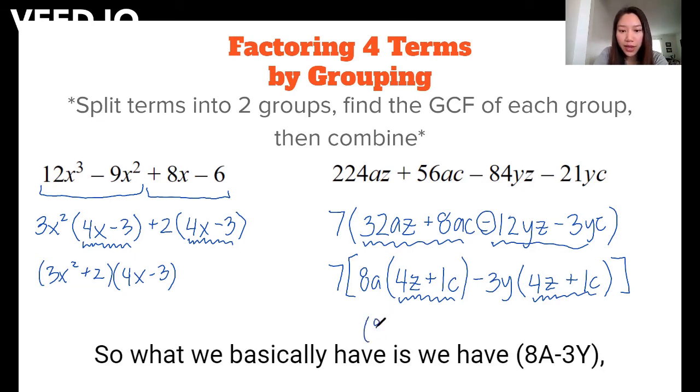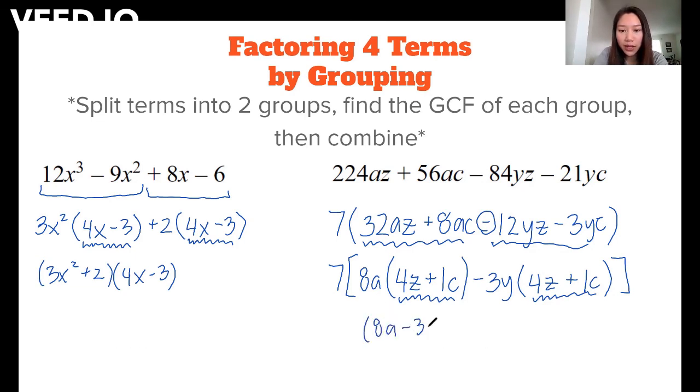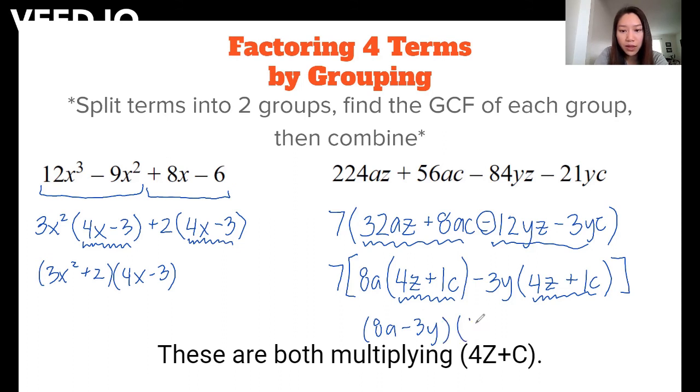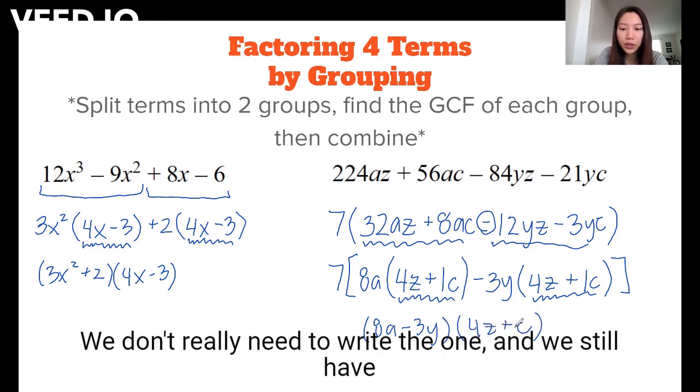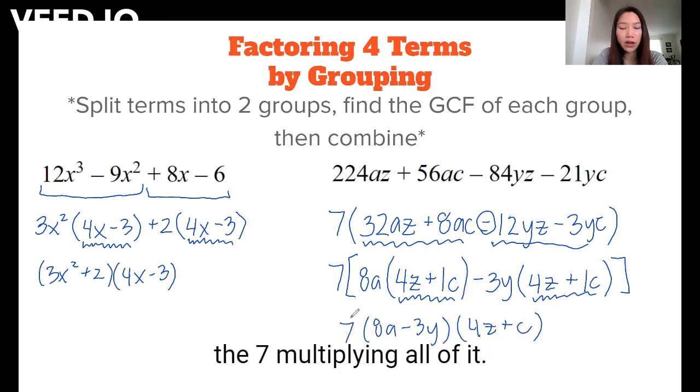So what we basically have is we have 8A - 3Y. These are both multiplying 4Z + C. We don't really need to write the 1. And we still have the 7 multiplying all of it.